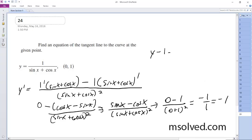All right, so y minus 1 is equal to negative 1 times x minus 0. So we get y minus 1 is equal to negative x. Y is equal to negative x plus 1. That's it.